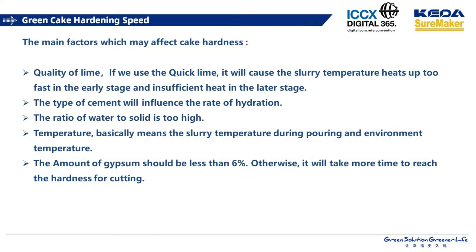Here, we would like to make a brief summary of the main factors that may affect cake hardness. The quality of lime is important — using quick lime will cause the slurry temperature to heat up too fast in the early stage with insufficient heat in the later stage. The type of cement will influence the rate of hydration. We should also check the ratio of water to solid — if the ratio of solid is too high, it will also affect cake hardness. The slurry temperature during pouring and the environment temperature cannot be ignored. The amount of gypsum should be less than 6%; otherwise, it will take more time to reach the required hardness for cutting.